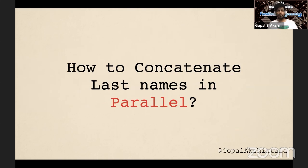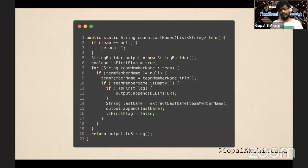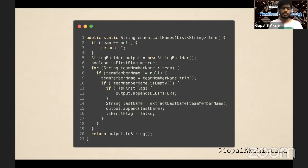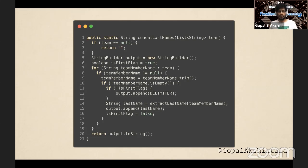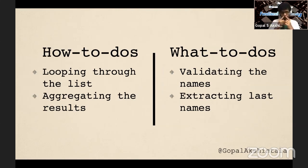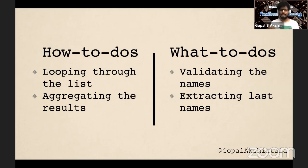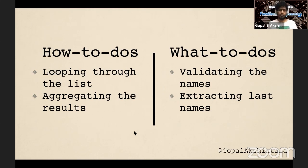Let's give a wrinkle to our problem: how to concatenate last names in parallel? With imperative code, making it parallel is really scary — using fork-join pools and thread pools, the code becomes unrecognizable once you add all the thread orchestration. The problem is there are 'how-to-dos' and 'what-to-dos' in a problem. Looping and aggregating results are how-to-dos; validating names and extracting last names are what-to-dos. In imperative code, we mix all of them, so when the how-to changes to parallel, we have to totally rewrite our code.